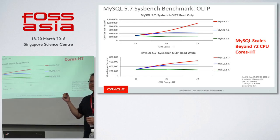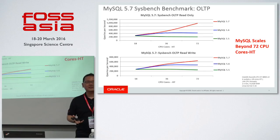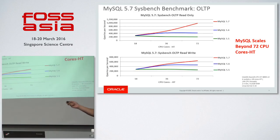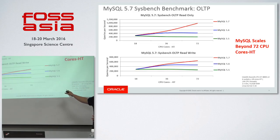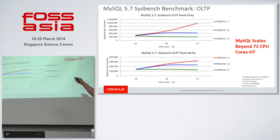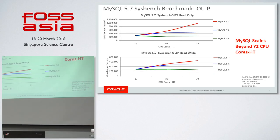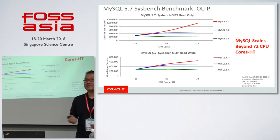This next chart shows how scalable we are. MySQL 5.6 was dubbed to scale up to 60 cores. With 5.7, we benchmarked on a 72-core system. Looking at this graph — if we add more cores, there's a big possibility it might still scale further, as the curve still appears to be rising.